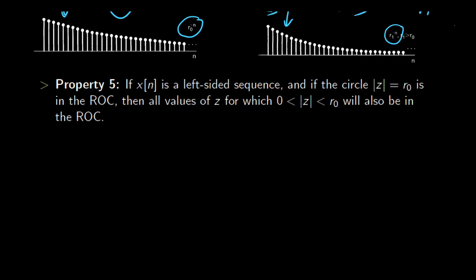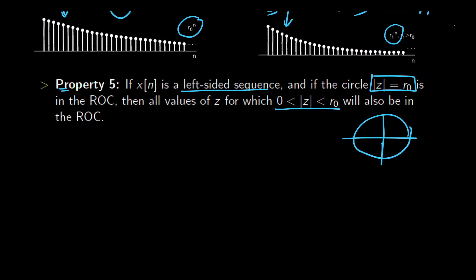Property five applies to left-sided sequences. It states that if the circle |Z| = R₀ is in the ROC, then all values of Z for which 0 < |Z| < R₀ will also be in the ROC — that is, circles inside R₀ are also included and will converge in a faster way.